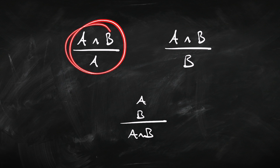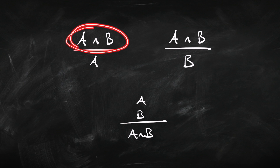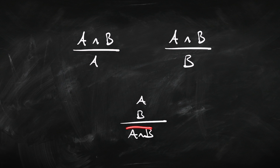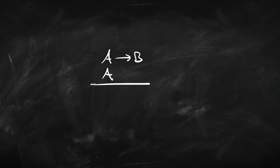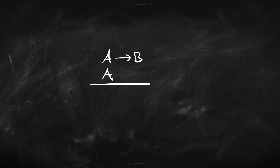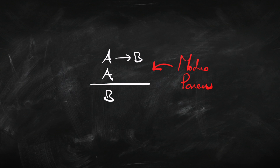I can eliminate 'and' — going from something with 'and' in it to one of the conjuncts — and I can introduce it, going from the conjuncts A and B to the conjunction 'A and B'. Here's another rule we've met in previous videos: if I have a conditional — if A then B — and I've also got the antecedent A in the proof, I can conclude the consequent B. This is known as modus ponens. It has the form: if A then B, and A, therefore B.